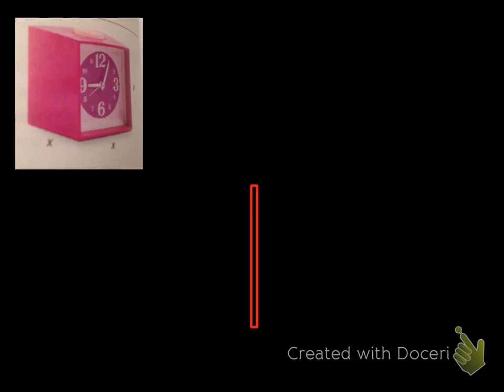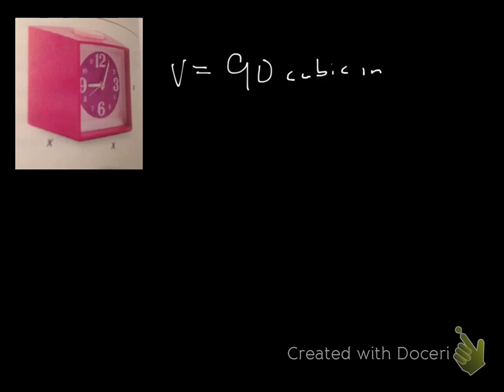This is a different type of problem. We're looking at a cubic clock, and the volume of this clock is 90 cubic inches. What we need to do is find x. This is a cube because every side is represented by x, meaning all sides are equal. If the sides were different, they'd be labeled x, y, z, or something like that.